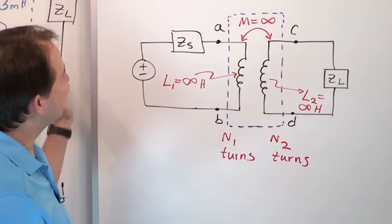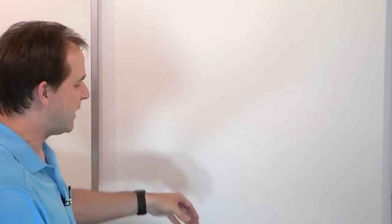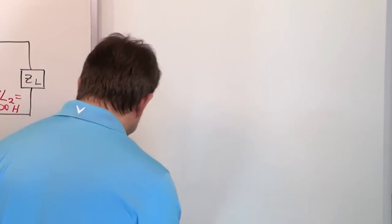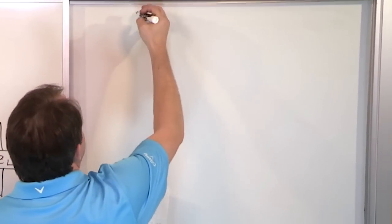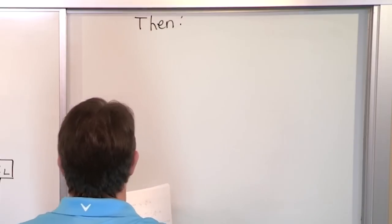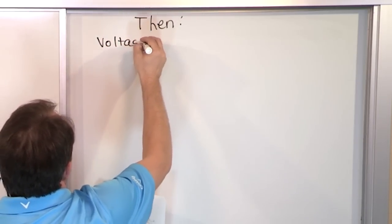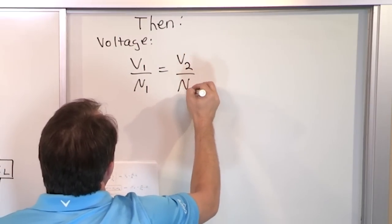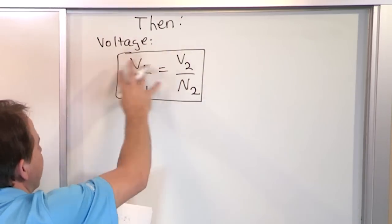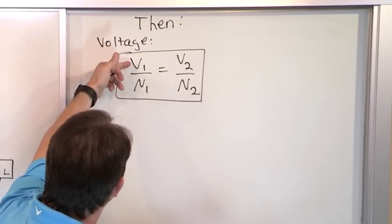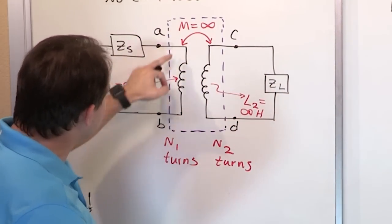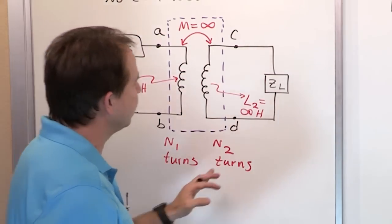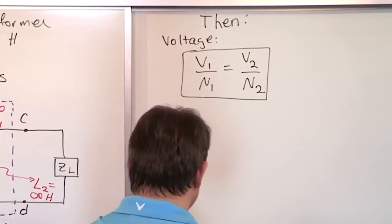What we're going to do later in the class is derive a lot of relations. But here's the punchline: for an ideal transformer, the voltage relation is V1/N1 = V2/N2. That means the voltage across the primary coil divided by its number of turns equals the same ratio as the voltage across the secondary coil divided by its number of turns. This is a symmetrical way to remember it. More instructively, solving for V2: V2 = (N2/N1) × V1.